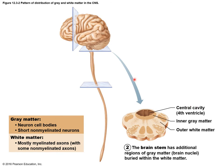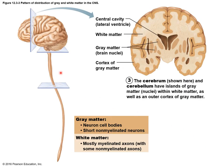Moving up to the brain stem — that connection between the spinal cord and the brain — you still have white and gray matter, and a central cavity, but the distribution is starting to change. The key comparison is between the spinal cord and the brain itself: in the cerebrum and cerebellum, the orientation switches — gray matter is now on the surface, and white matter is in the deeper interior.